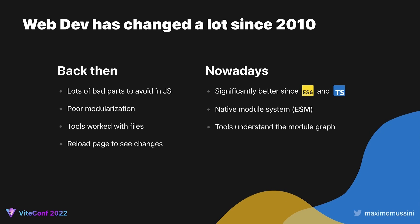In addition, since ESM can be statically analyzed, tools like Webpack and Rollup have been able to implement sophisticated techniques such as tree shaking and hot module replacement. Now, we can see changes as soon as we save a file, without reloading the page, leading to a faster feedback cycle.